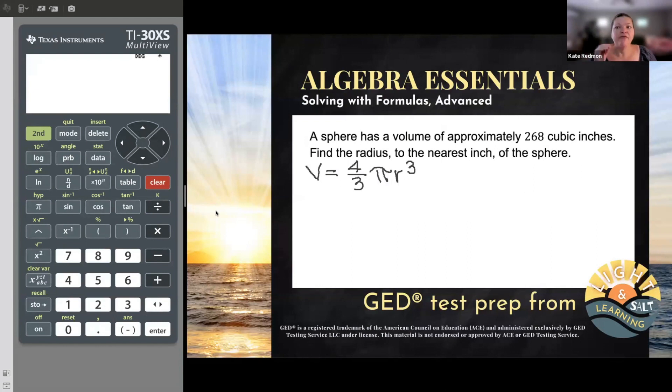So if there was ever a problem that you wanted your calculator for, it's this one. Because not only does it have a fraction, which is challenging to do without a calculator, we're going to need to deal with this r³. And we're going to need to do an operation that you wouldn't be able to do without a calculator, except by a very long, tedious guess and check method. So guys, go get your calculator. Okay, that's the main reason we're doing this. But anyway, enough lecturing. Let's start the problem. We know something about this sphere. We have this number 268. And it's important to know what that 268 represents. According to this, a sphere has a volume of approximately 268 cubic inches. So that 268 is the volume. So let's make sure that we put it in its right place, which is under the V for volume.